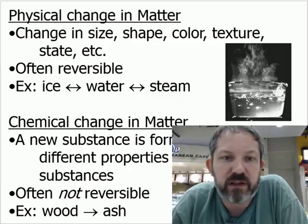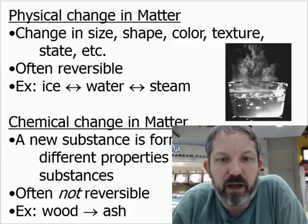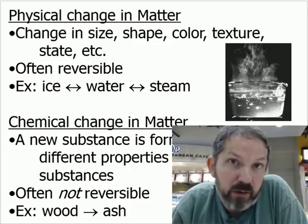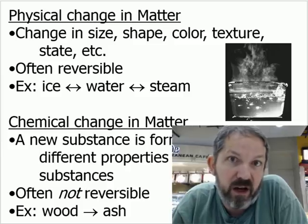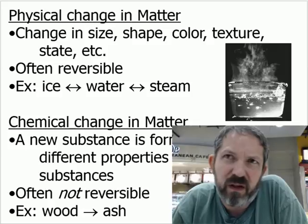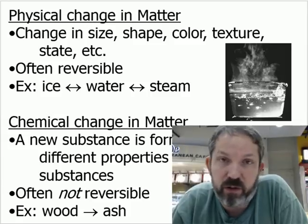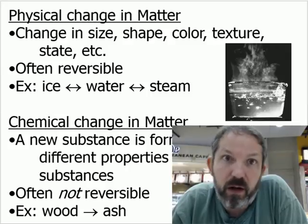Physical changes in matter — when you change size, shape, color, texture, or state — are often reversible. So I can go from ice to water to steam, and back from steam to liquid to solid. Chemical changes are often irreversible, though not always. If I cook an egg, that's a chemical change to the proteins, and I cannot uncook it. You can't burn a piece of wood and then unburn it — once those molecules have separated into the atmosphere and ash, you can't recreate that log. Chemical changes tend to be more permanent, but there are reversible chemical changes too.